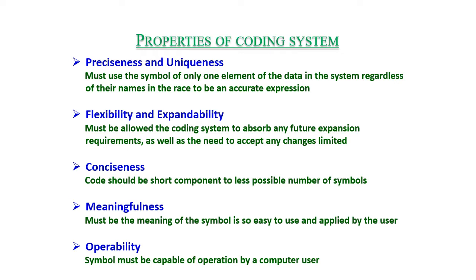Conciseness — code should be short, composed of the least possible number of symbols. Meaningfulness — the meaning of the symbol should be easy to use and applied by the user. Operability — the symbol must be capable of operation by a computer user.